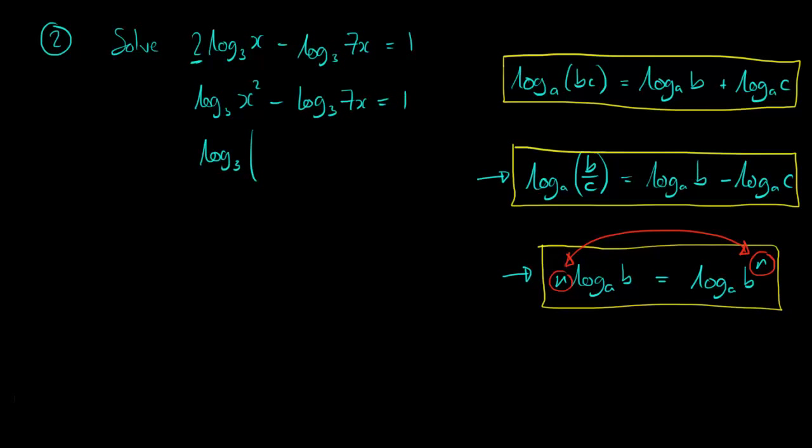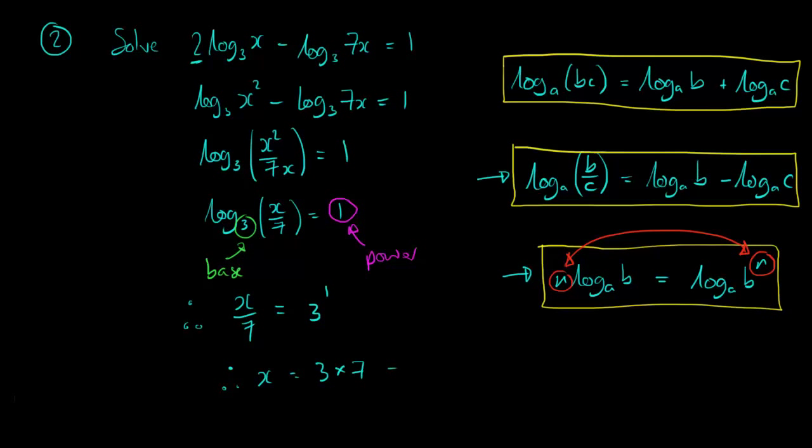Then we can use the division rule to join them together. Log of x squared over 7x is equal to 1. And again, once we've just simplified what's in the bracket here by cancelling the x, we're going to consider the exponential version of this logarithm. So the base is 3, the power is 1, so x over 7 is equal to 3 to the power of 1. Now, which of course is just 3, and all we're left to do is to multiply by 7, and we're left with x equals 21.